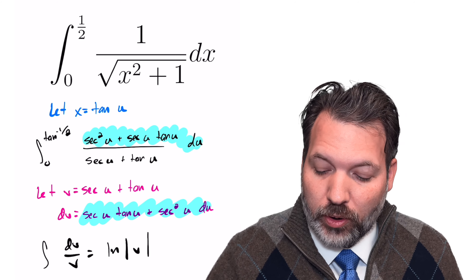Plugging in the upper boundary, we get the natural log of the secant of the inverse tangent of one half, plus the tangent of the inverse tangent of one half. The tangent and inverse tangent cancel, leaving one half. Then we subtract the natural log evaluated at 0: secant of 0 is 1 and tangent of 0 is 0, so we subtract the natural log of 1, which is 0. The lower boundary vanishes entirely.